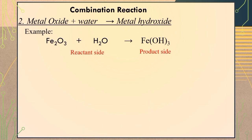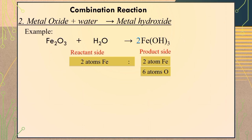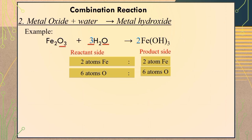To balance the equation, we start by adjusting the coefficient of the product from one to two, making iron balanced with two atoms on both the reactant and product side. Since oxygen has now become six atoms on the product side — that is two multiplied by three equals six — to balance the oxygen atoms we adjust the coefficient of H2O from one to three, making also six atoms of oxygen on the reactant side: three from H2O plus three from iron(III) oxide gives a total of six oxygen atoms.